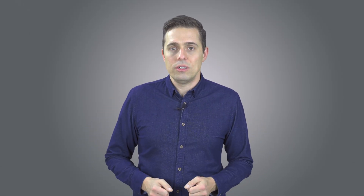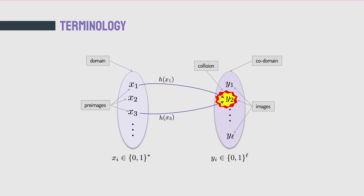So what is a hash function? At its core, a hash function is just some function that takes arbitrary length inputs and maps them to fixed length outputs. A hash function accepts as input elements from a set — we call this set the domain, and the elements living in this set we call the pre-images. The hash function outputs elements from a set we call the codomain, and elements of the codomain are called the images. So a hash function maps pre-images from the domain to images in the codomain. The difference from any function is that elements of the domain have arbitrary length, whereas elements of the codomain are fixed. If you have an l-bit hash function, the output is l bits long.